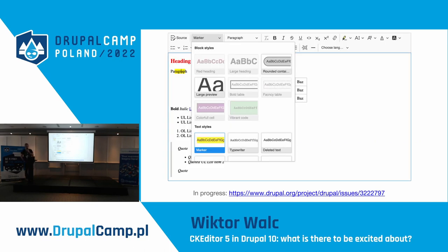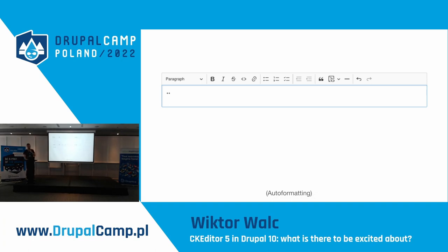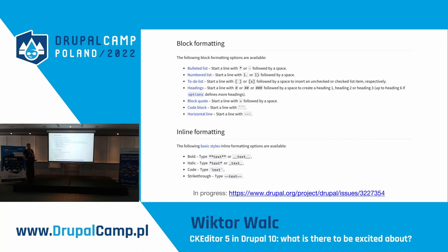There is an upcoming styles dropdown that has been reworked to present nicely how a specific style will look. It's in progress with a dedicated issue being worked on. Another feature called auto-formatting is also in progress and expected later in Drupal. Basically, we added support for Markdown formatting — if you're familiar with Markdown and don't want to use toolbar buttons, you can use Markdown syntax. For example, surrounding text with two asterisks makes it bold. Other supported syntax includes lists, code blocks, block quotes, and horizontal lines. Check our documentation for more details.